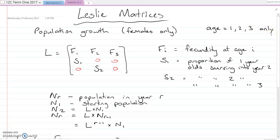After age three we just assume that they die, so that's why it's three by three. It could be bigger, but that's all we're going to look at right now. So the top row here, the F's, this is fecundity which is the fertility. So it's the number of female offspring that each female will produce at a particular age.